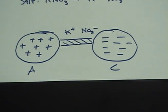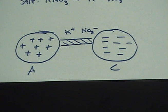Here we have the anode with its positive ions in solution and the cathode with its negative ions in solution, because as I mentioned earlier, the anode produces more positive ions than the cathode.